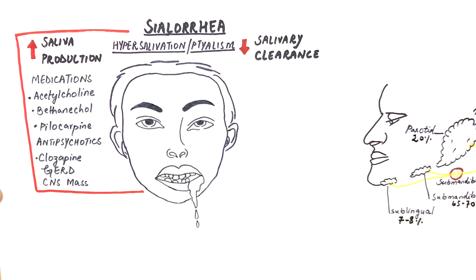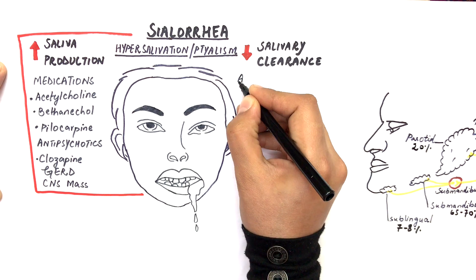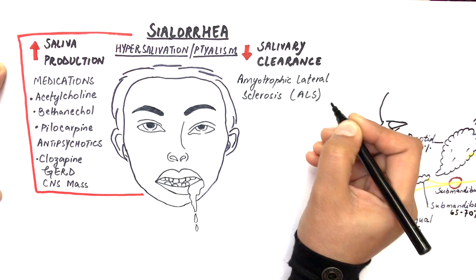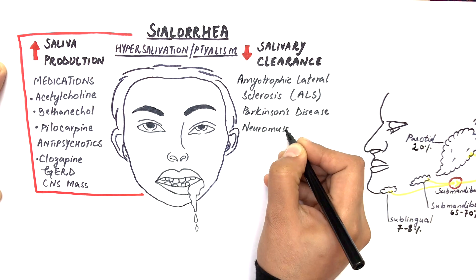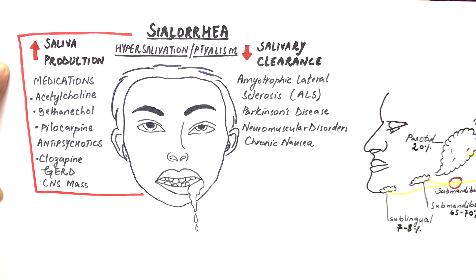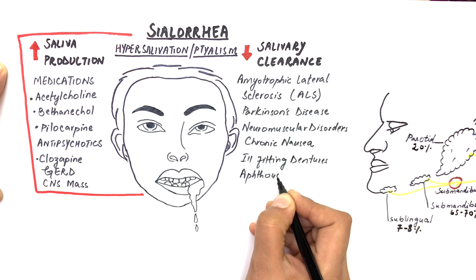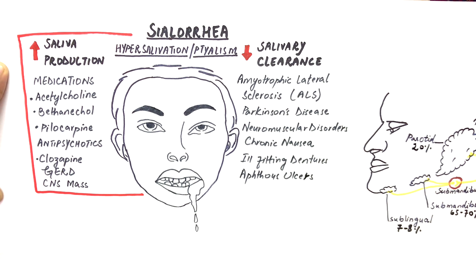Decrease in salivary clearance may be due to a loss in neuromuscular control and other irritations in the oral cavity, resulting in difficulties in swallowing and accumulation of saliva. This is encountered in amyotrophic lateral sclerosis, Parkinson's disease, and other neuromuscular disorders. Chronic nausea, ill-fitting dentures, and aphthous ulcers can also cause a decrease in salivary clearance due to difficulties in swallowing.